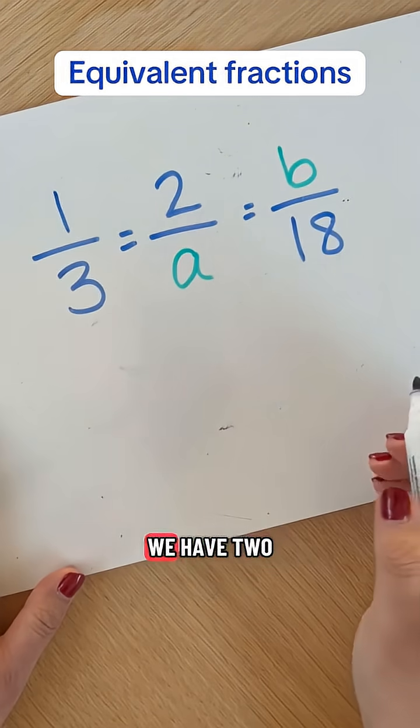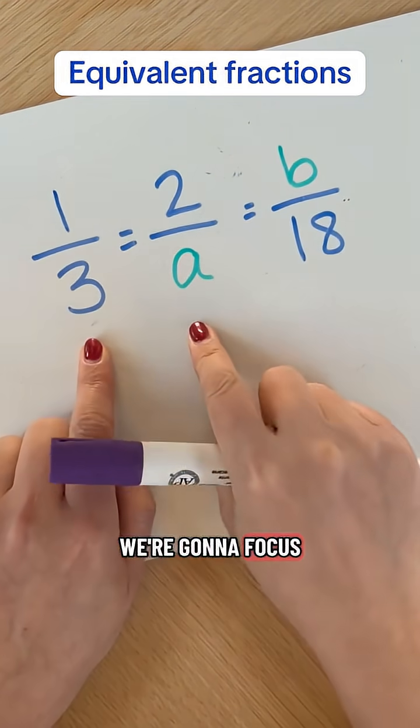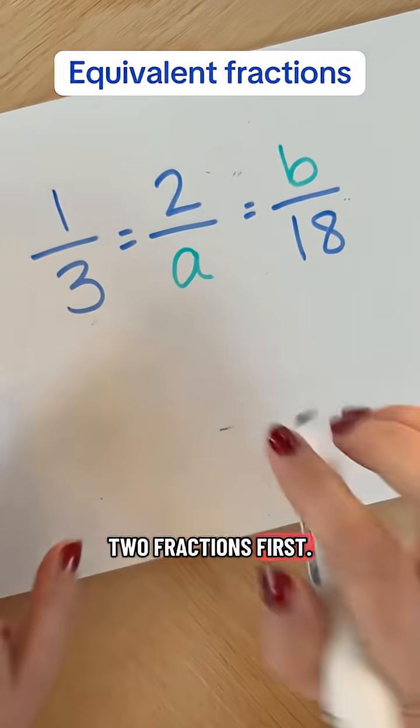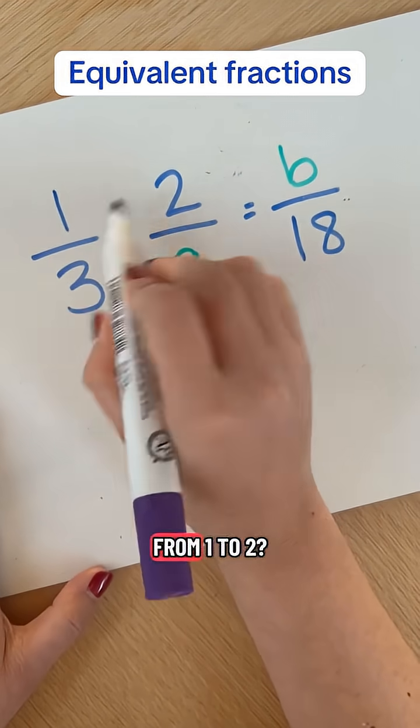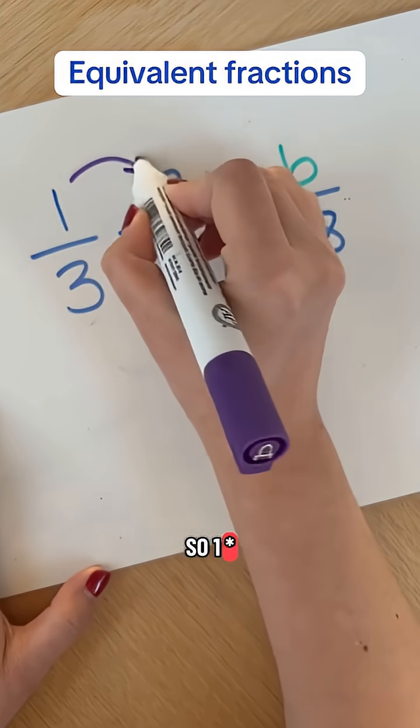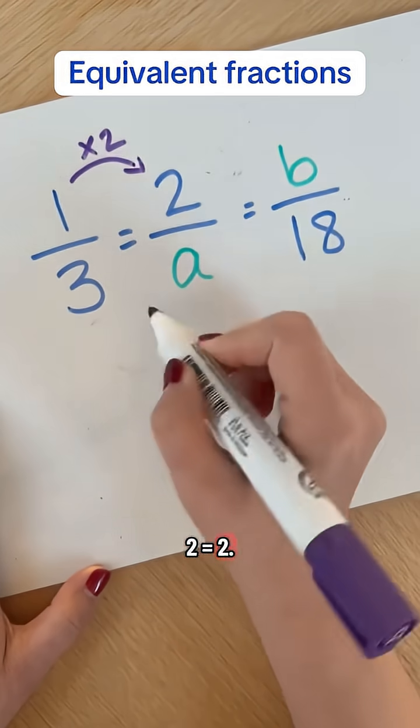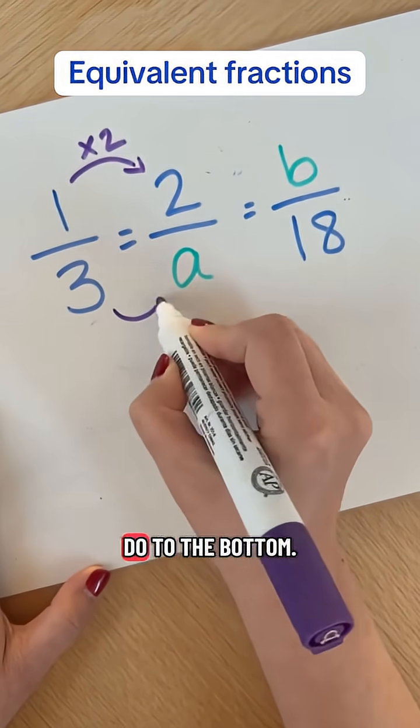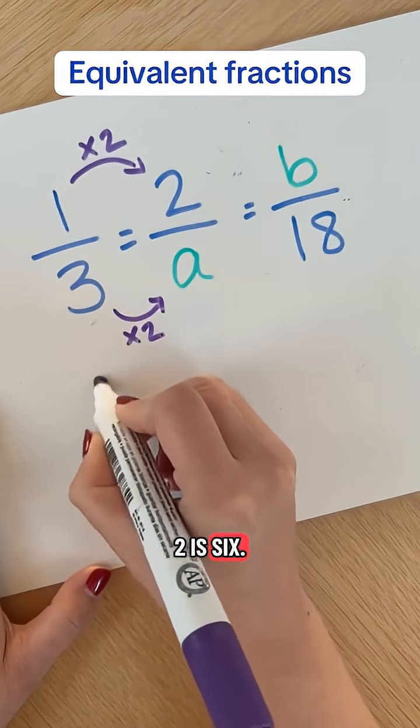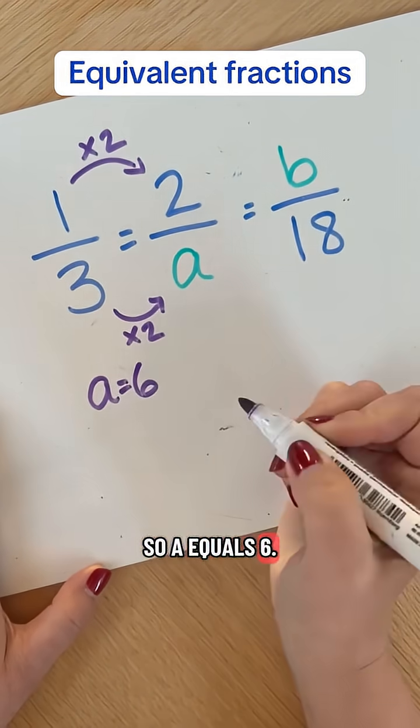In this question, we have two unknowns, A and B. We're going to focus on the first two fractions first. What do we need to multiply by to get from 1 to 2? So 1 times 2 equals 2. And whatever you do to the top, you must also do to the bottom. So 3 times 2 is 6. So A equals 6.